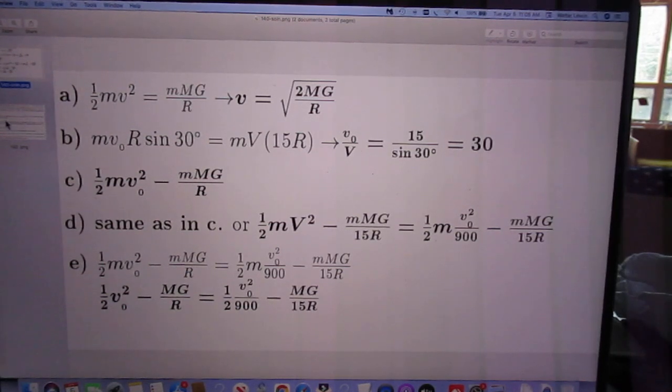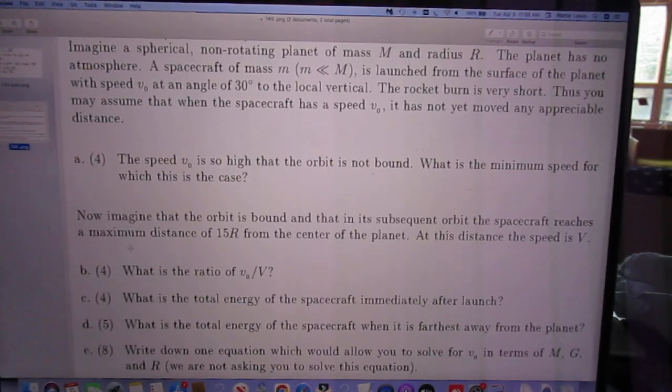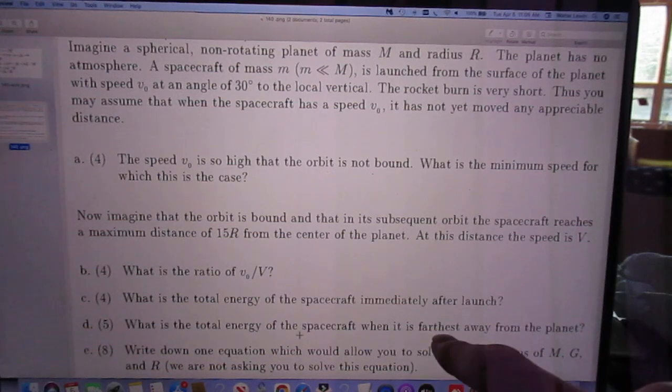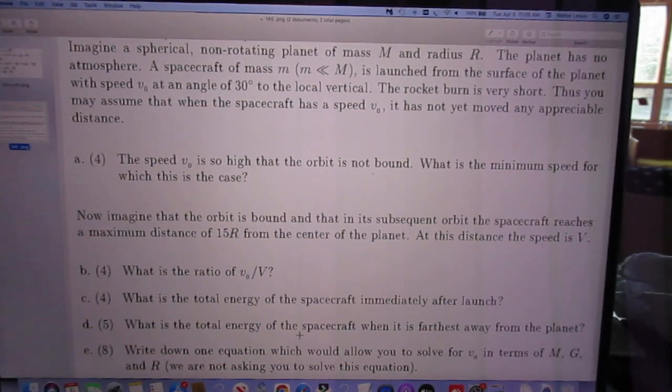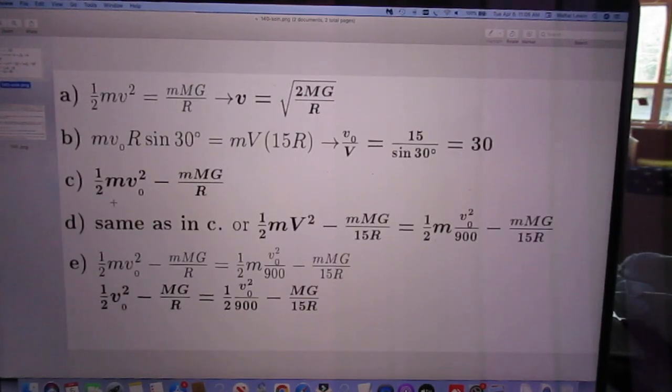Then the second question. What is the total energy of the spacecraft when it is farthest away from the planet? Of course it has to be the same. The total energy cannot change. So the same as in C.